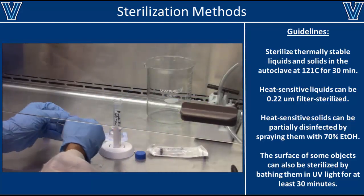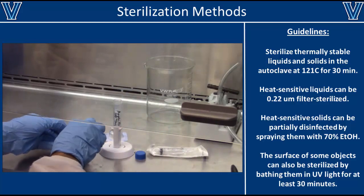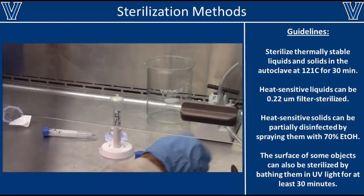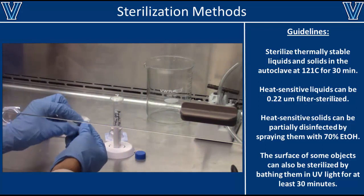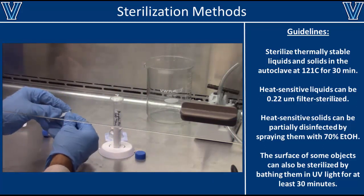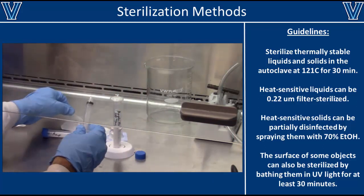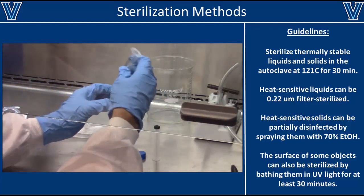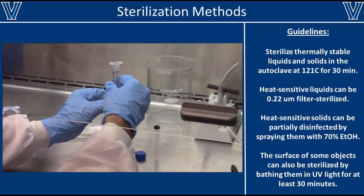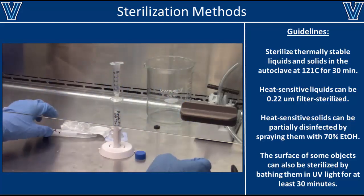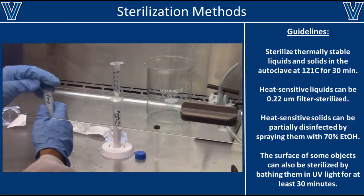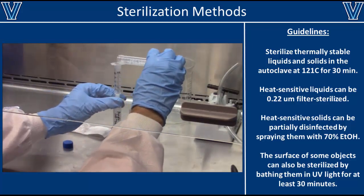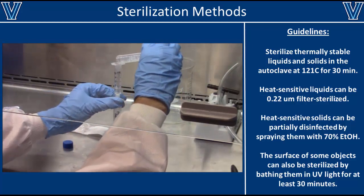If you need to sterilize a solution that's not thermally stable and cannot be autoclaved, an alternative is to use a 0.2 micron filter. Most bacteria and other pathogens are larger than 0.2 microns and will be retained by the filter. However, most viruses are smaller than 0.2 microns, so they will not be removed by this method.